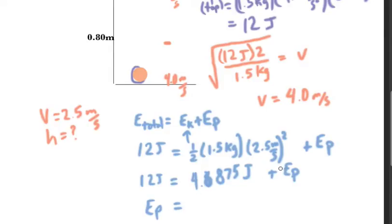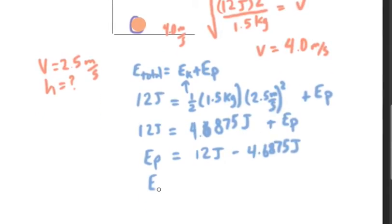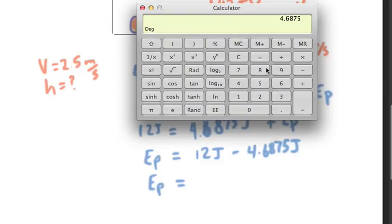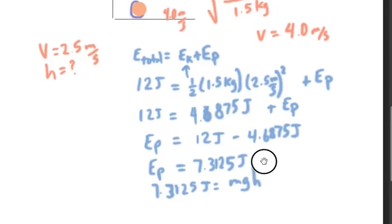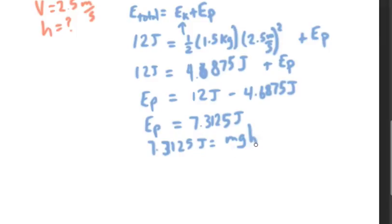Now this is what I'm trying to find, so I'm just going to rearrange it over here. Technically it's a negative, but the way that I'm rearranging, I'm going to negate the whole equation, and so I'm going to have 12 joules minus 4.6875 joules. And so my potential energy equals 12 minus that, which equals 7.3125 joules. Okay, so now I know the energy at that point. And now I can put that number over here: 7.3125 joules equals mgh.